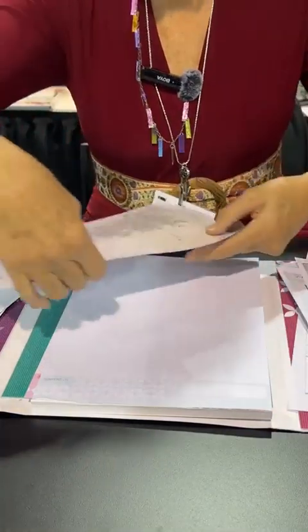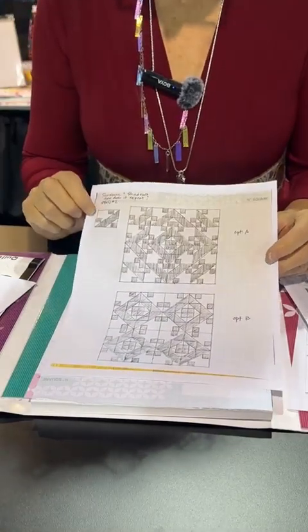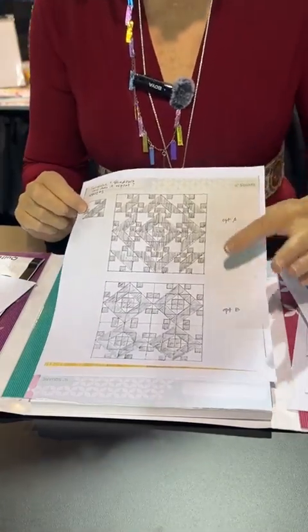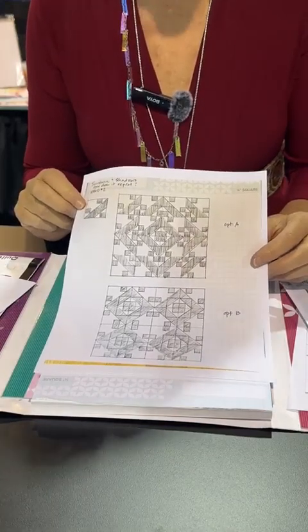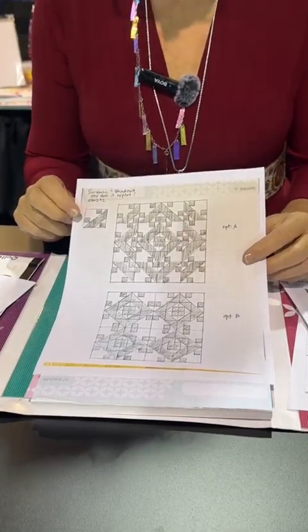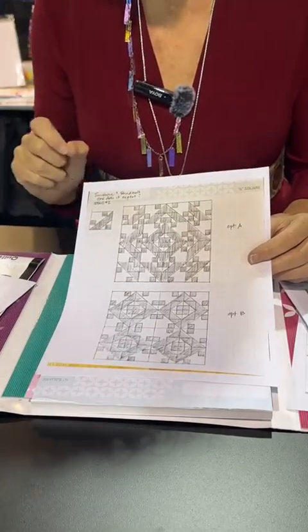So say that you have a favorite block, but you want to see how it's going to work in the repeat. So she took the sunshine and shadow block and look at these two completely different quilts she designed just using one block. So that's really what can you discover when you repeat a quilt block?